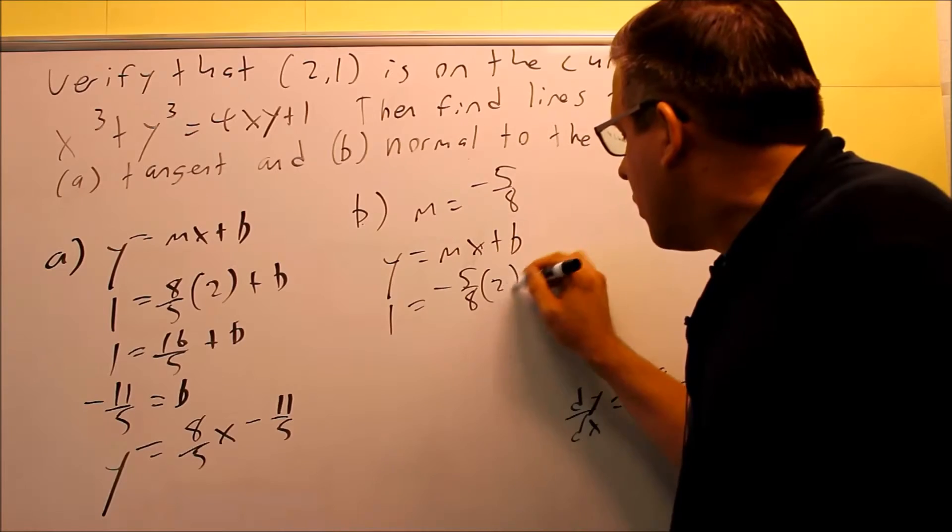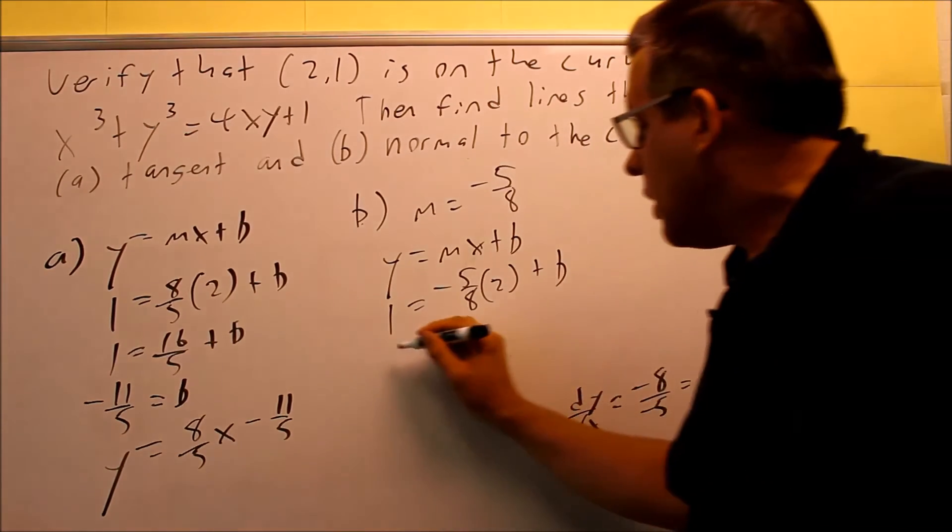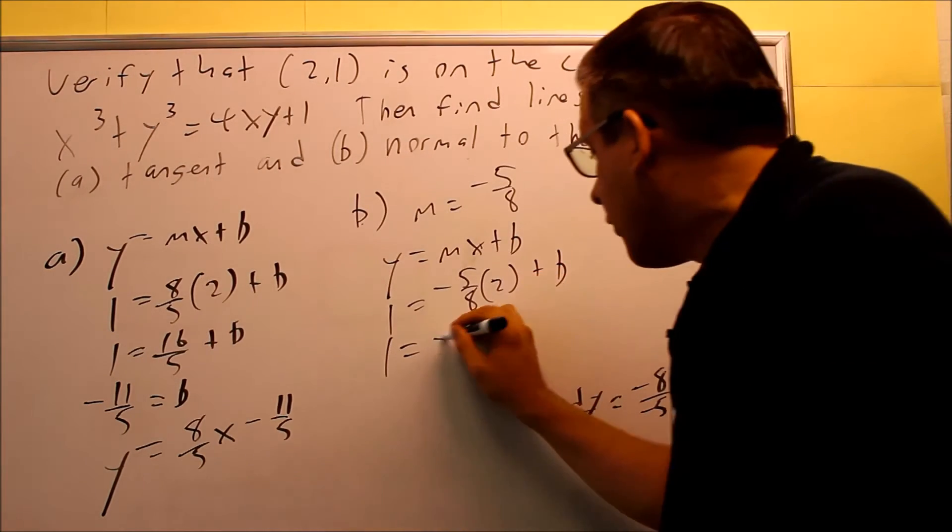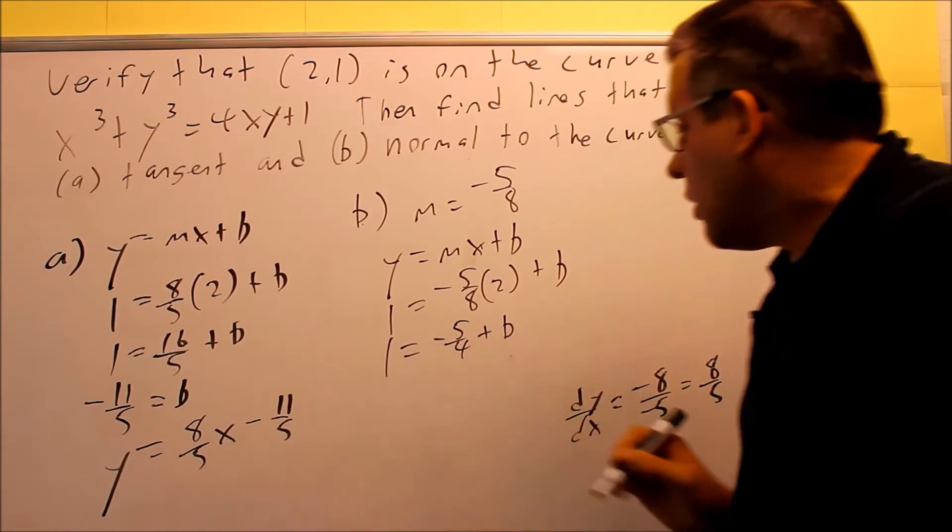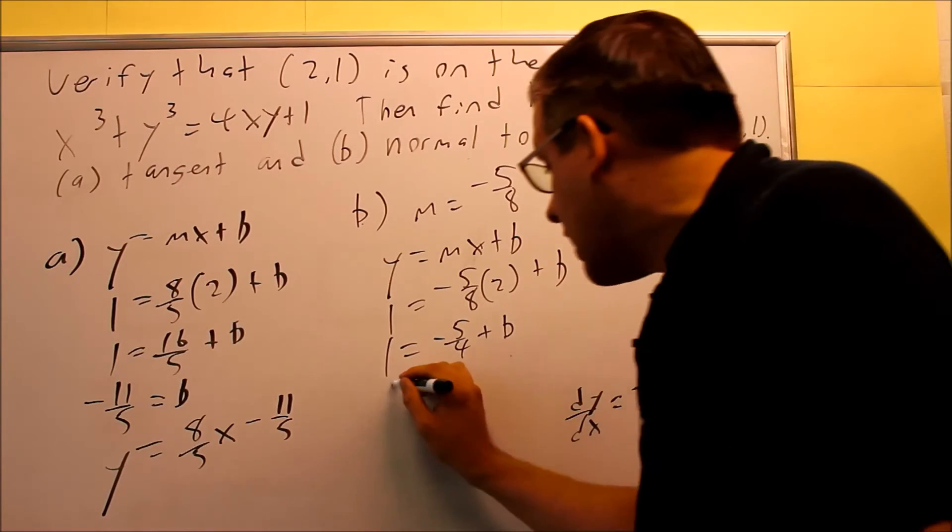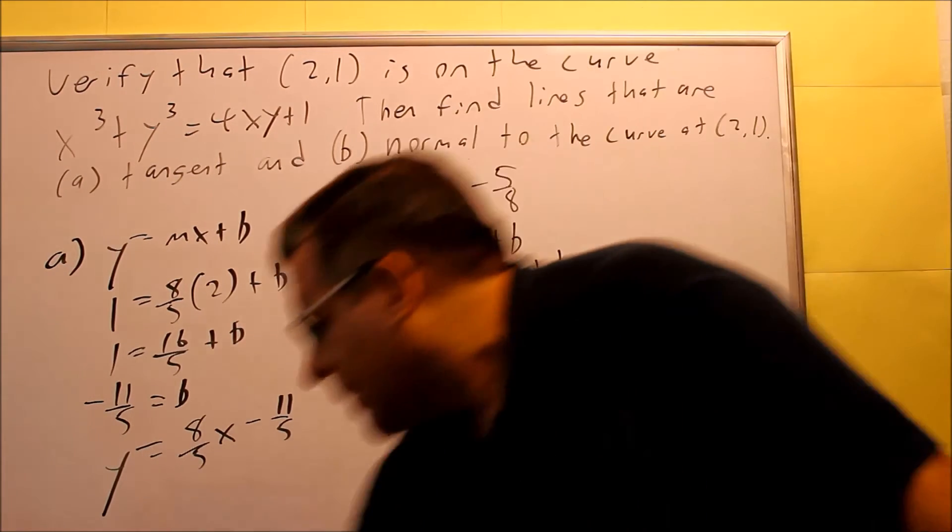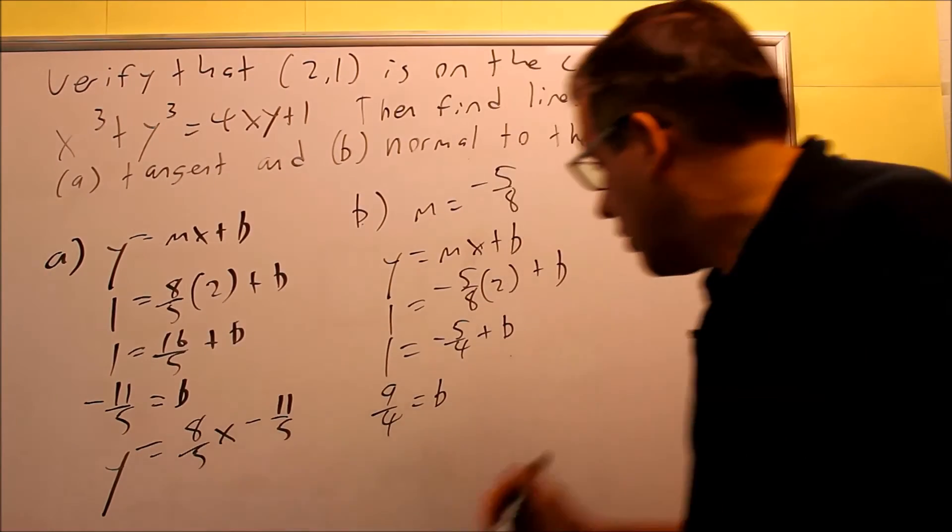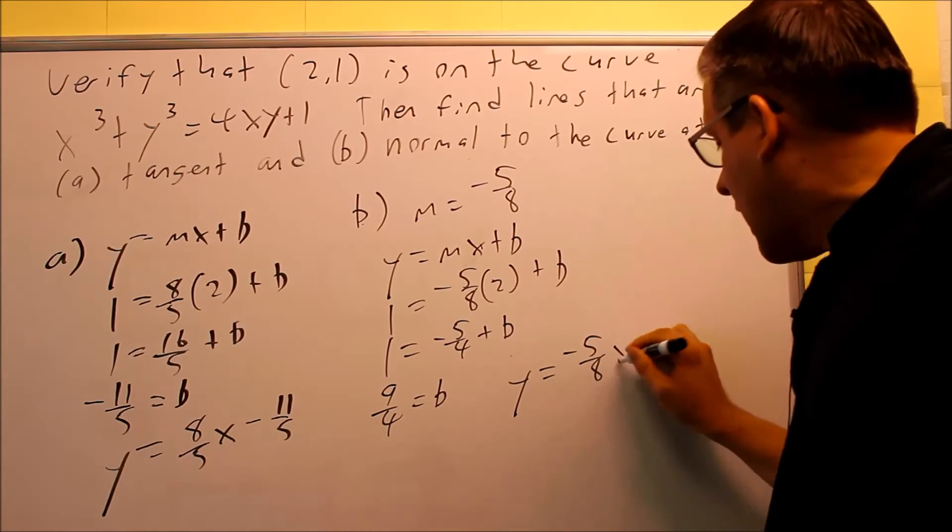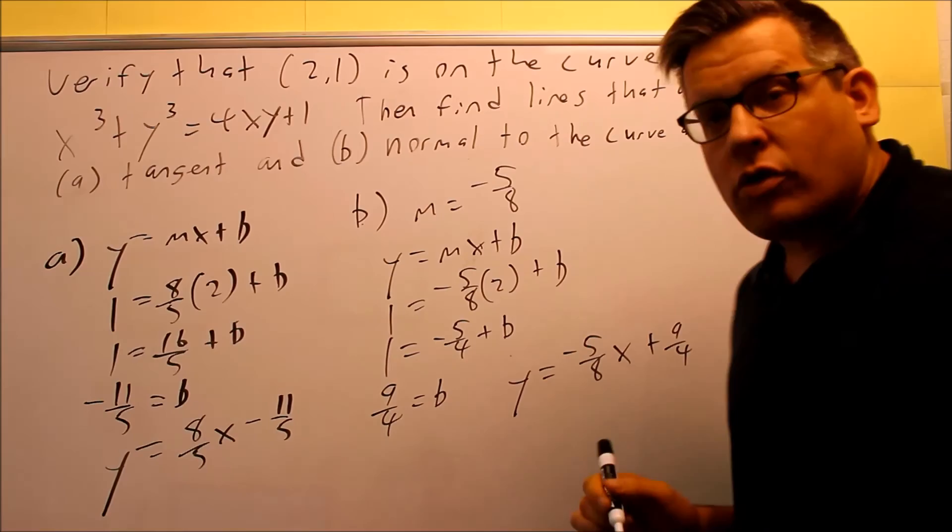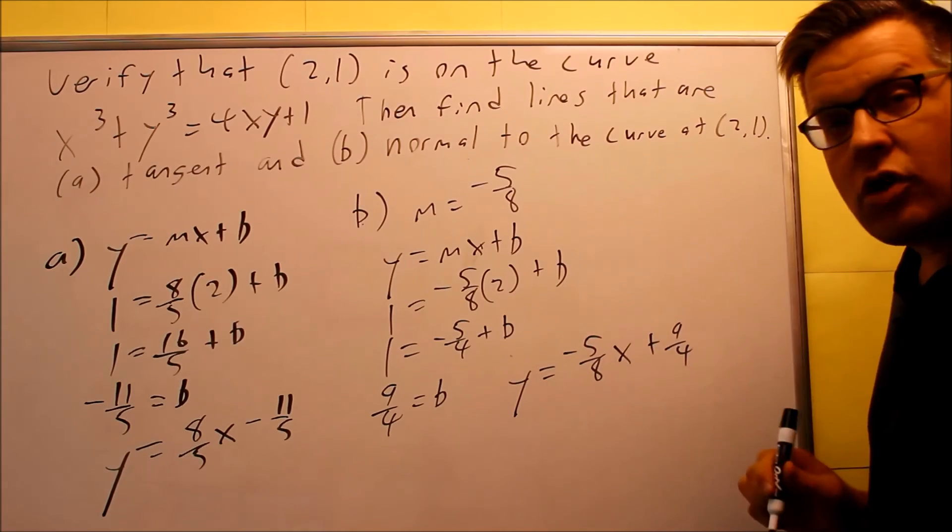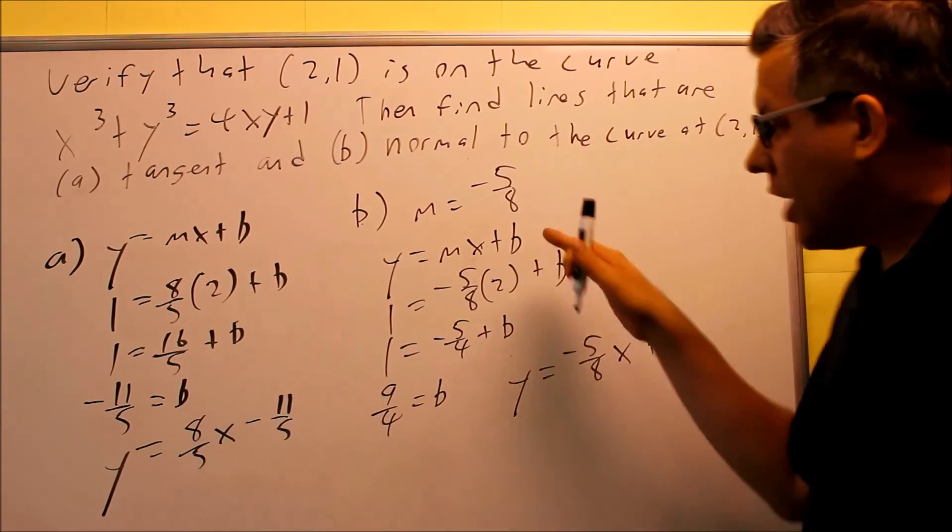We're going to solve for b, and doing so, this is going to be reduced, we can get negative 5 fourths plus b, and then we add 5 fourths to both sides. So 4 fourths plus 5 fourths is 9 fourths is your b, and then we can finally write our equation. So we have y equals negative 5 eighths x, and then plus 9 fourths, so that would be the equation that is normal to the curve. That's our line normal to the curve at 2 comma 1. So we verified the point, and here's our a and b answers.